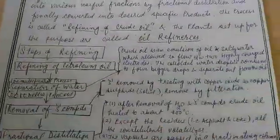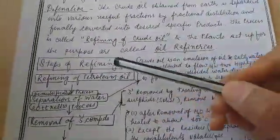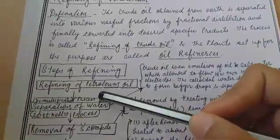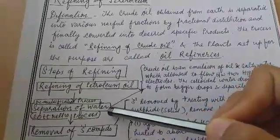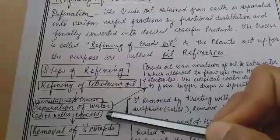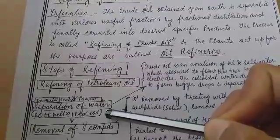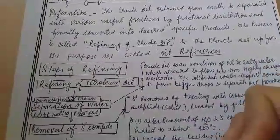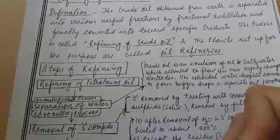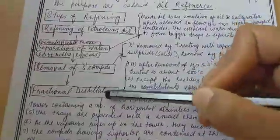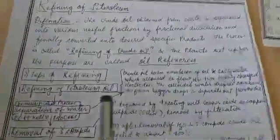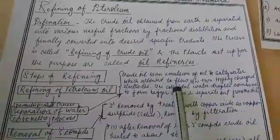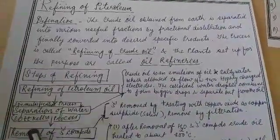There are mainly three steps in oil refining. The first is demulsification or separation of water, also known as the cottrell process. The second is removal of sulfur compounds. The third is fractional distillation. We will go through each one by one.